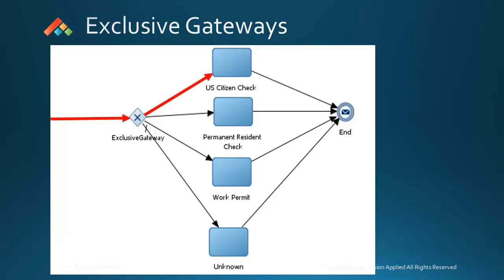Now how does the process token choose which path to take? There are conditions set up on each one of these paths, and whichever condition evaluates to true, that's the path the token will take.